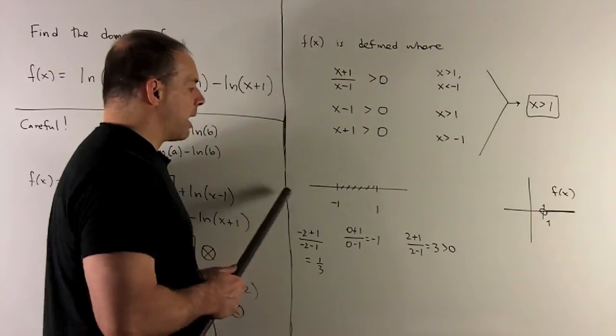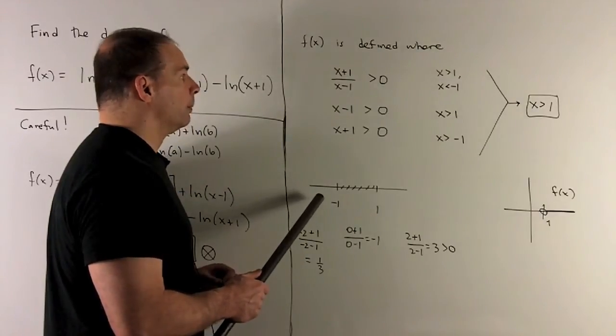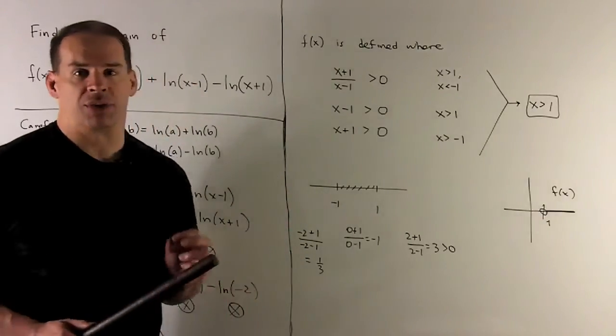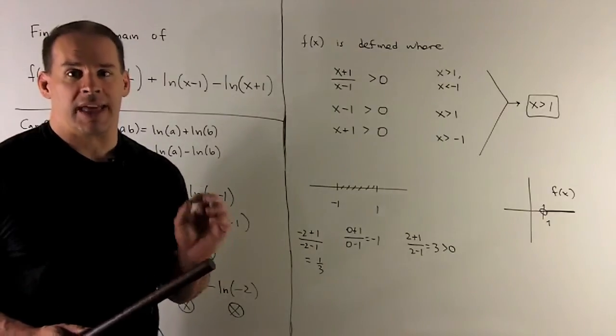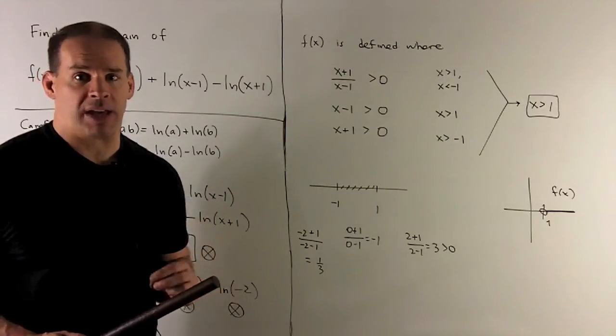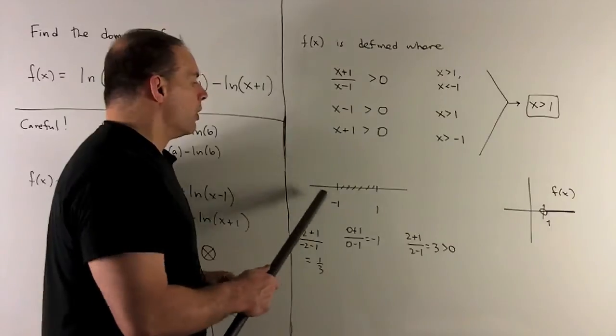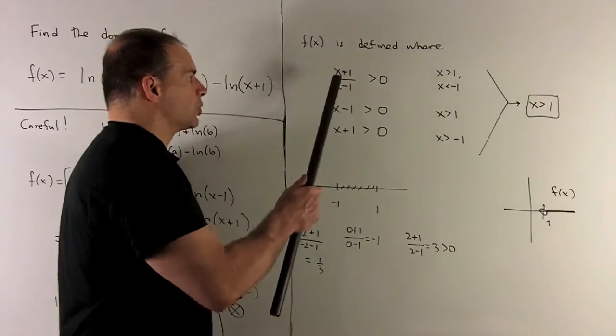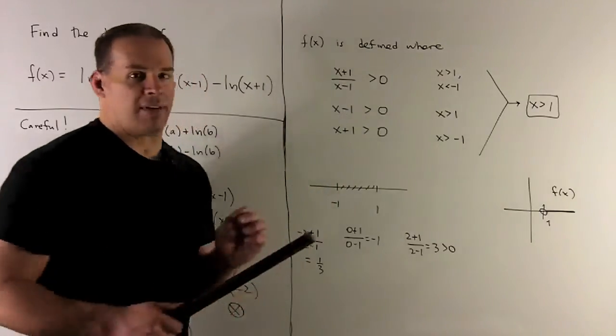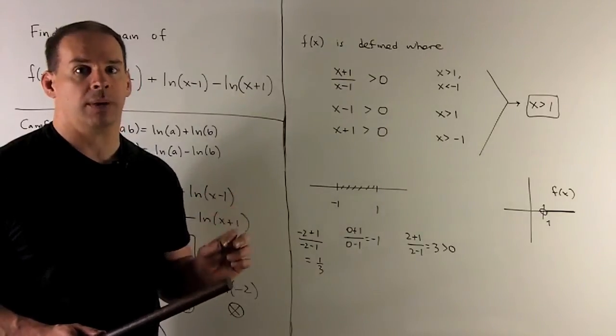Then on this side, beyond minus 1, we'll try minus 2. It's going to give me minus 1 over minus 3, gives me one-third. That's positive. So the whole region is positive there. So all the points that'll be good for (x+1)/(x-1), we'll have x greater than 1 or x less than minus 1.